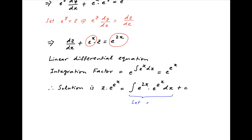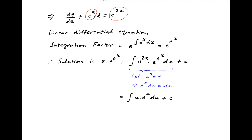Now to evaluate the integral on the right hand side, let e raised to the power x be equal to u. Therefore, e raised to the power x dx is equal to du. Therefore, the right hand side is equal to the integral of u times e raised to the power u du plus the constant of integration. Integrating by parts, the integral is equal to u times e raised to the power u minus e raised to the power u plus the constant of integration, and this can be written as e raised to the power u times (u minus 1) plus c.